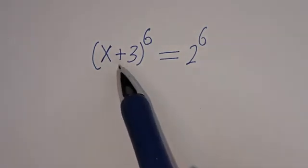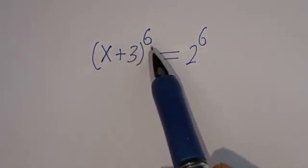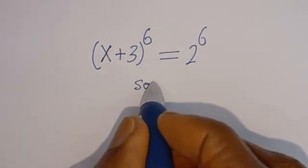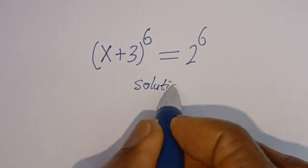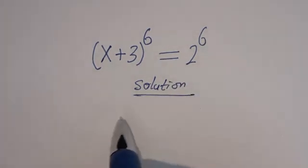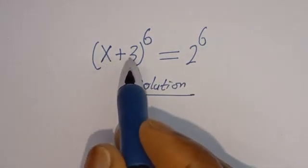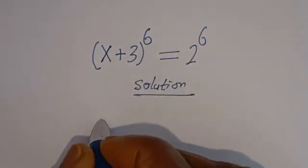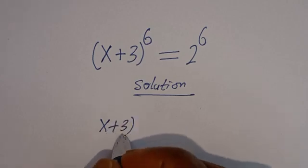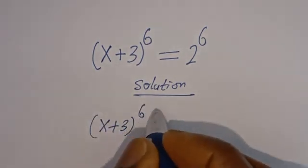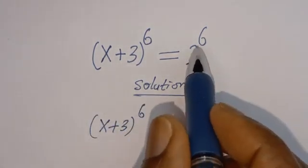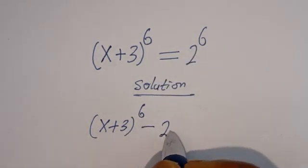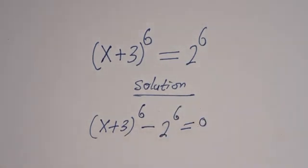Hello. How to solve for x in this equation: x plus 3 to the power of 6 is equal to 2 to the power of 6. From here we have x plus 3 to the power of 6 is equal to 2 to the power of 6. Let's bring this 2 to the power of 6 to this side, so minus 2 to the power of 6 is equal to 0.